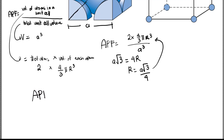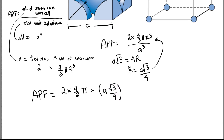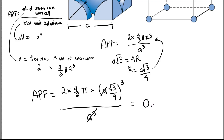APF will then be equal to 2 times 4/3 π times (A times square root of 3 over 4) cubed, over A cubed. We can cancel out A, and solving for this, the answer is equal to 0.68.